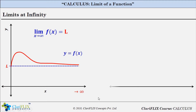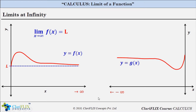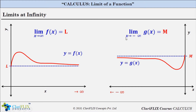On the contrary, say y equals g of x is another function shown by the red curve. We need to know what happens to the value of the function when x is approaching negative infinity, i.e. a very very small value. As seen in the graph, as x tends to negative infinity, the value of g(x) approaches capital M. Therefore, limit of g(x) as x tends to minus infinity equals M. Limits at infinity basically defines the end behavior of a function — the behavior at the extreme edges of the domain.